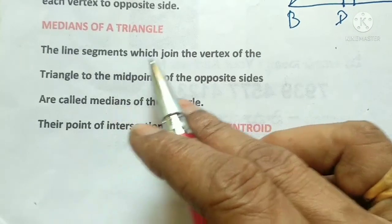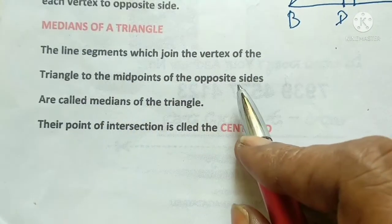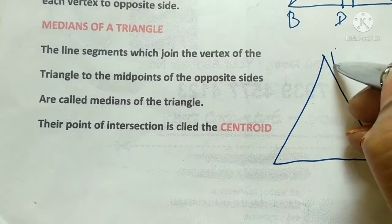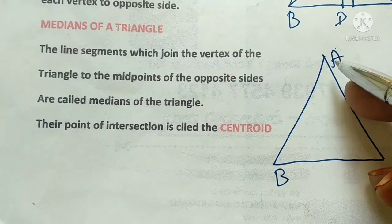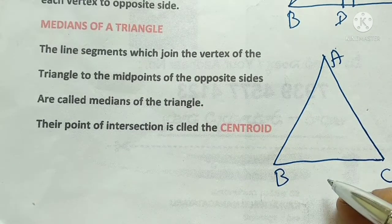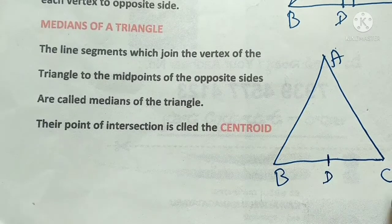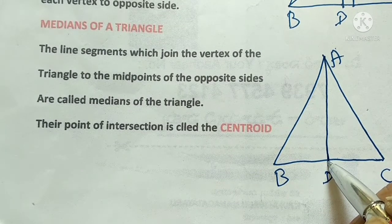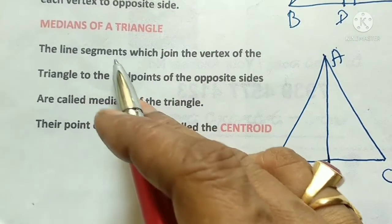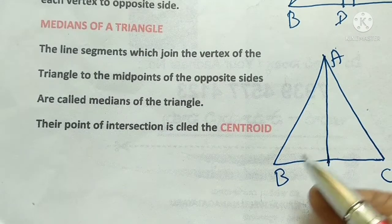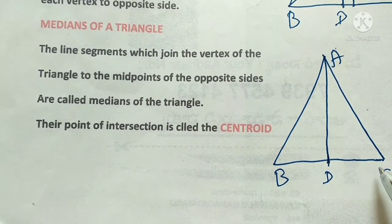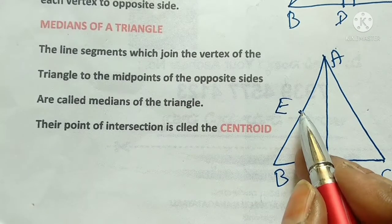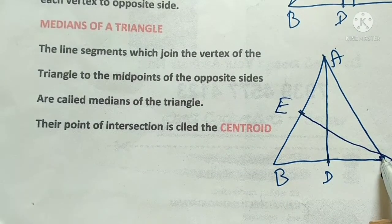What is the median of a triangle? A median is a line segment which joins the vertex of the triangle to the midpoint of the opposite side. In triangle ABC, vertex A joins to the midpoint D of opposite side BC — AD is the median. Vertex C joins to midpoint E of opposite side AB — CE is the median.